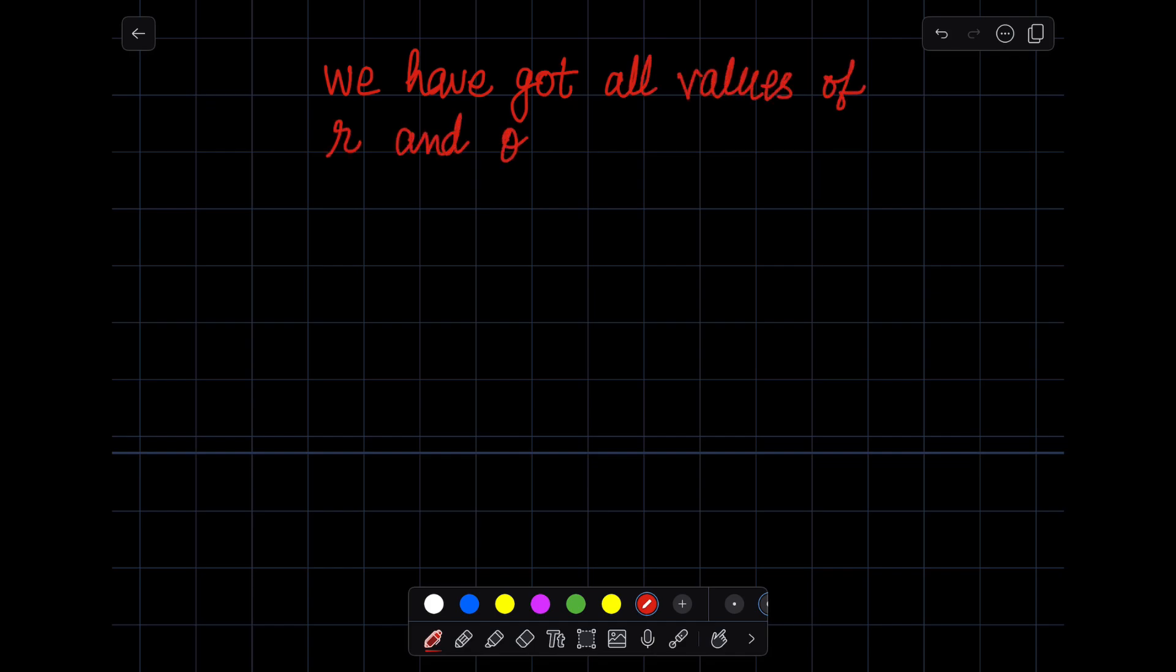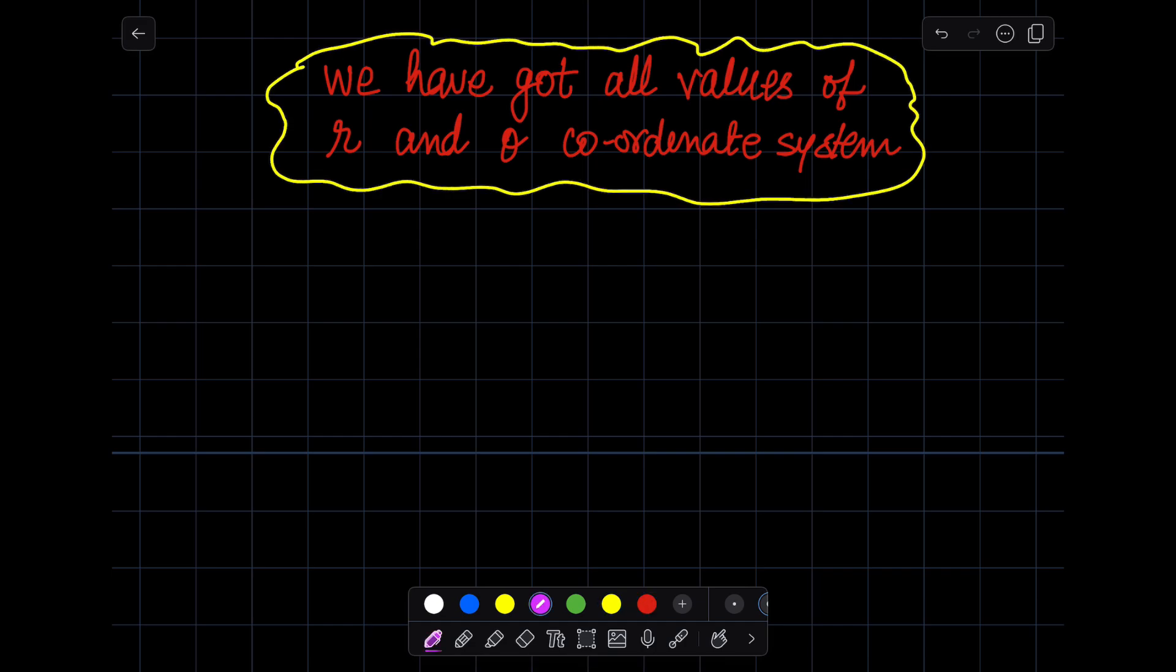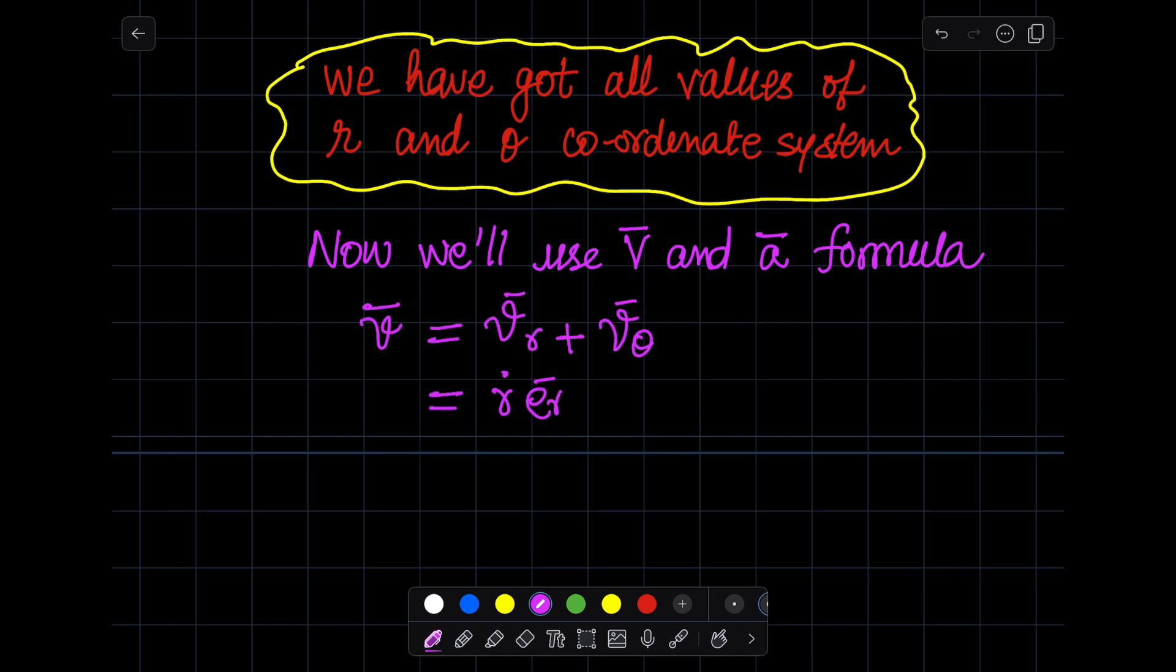You can see there we have all values of r and theta from the problem. So now we will utilize the formula for velocity and acceleration to find further components of it. We have expanded the formula for velocity in radial direction and in the theta direction.